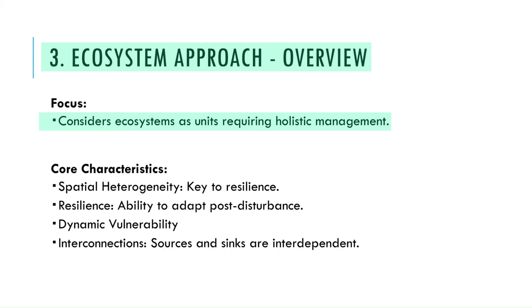This approach emphasizes four key aspects. First, spatial heterogeneity — diversity within an ecosystem is crucial for its stability and resilience. For example, a forest ecosystem depends on a variety of plants, animals, and microorganisms to thrive. Second, resilience — the ability of an ecosystem to recover from disturbances, whether natural or human-induced, like how mangroves can bounce back after a storm. Third, dynamic vulnerability — acknowledging that ecosystems are constantly changing and adapting to external factors, making proactive management essential.